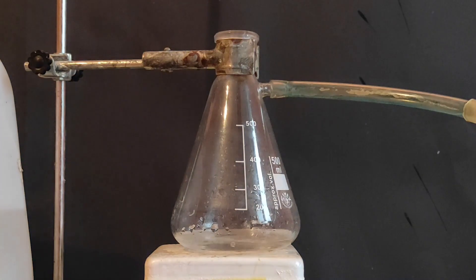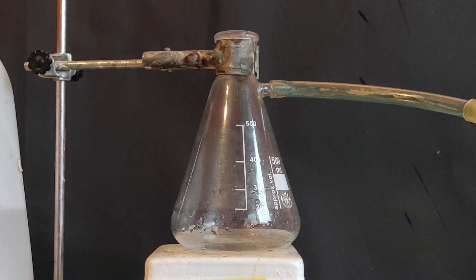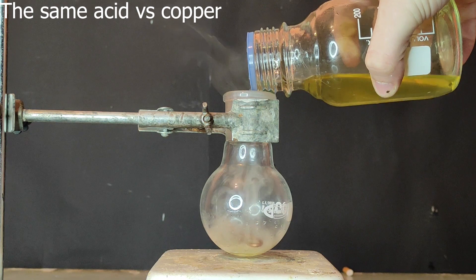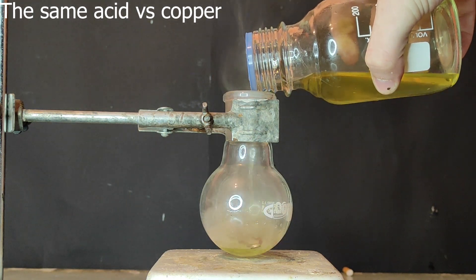So first to the flask I add small amounts of water, and that's to dilute the nitric acid that I'm about to add. The acid that I currently have is 100% nitric acid, which means it doesn't have water in it.